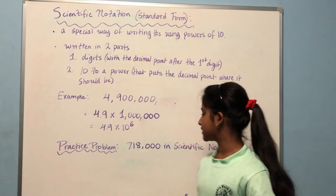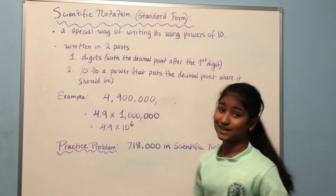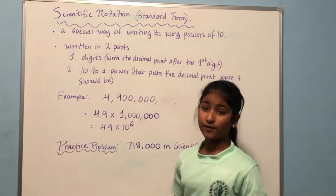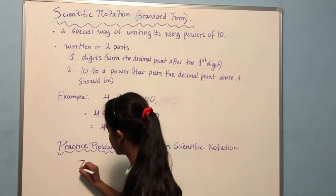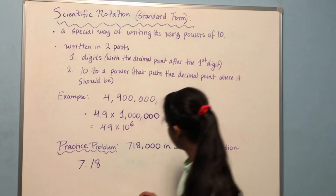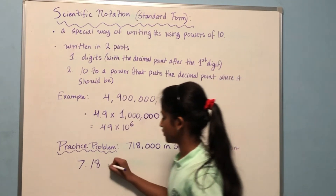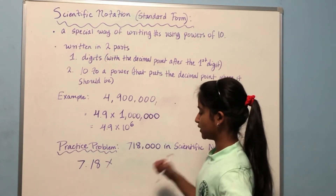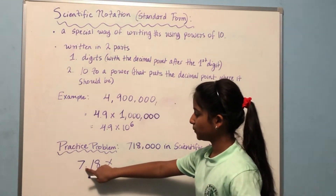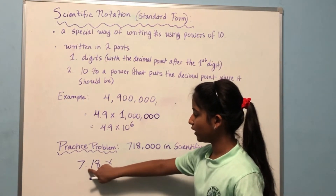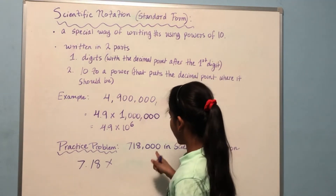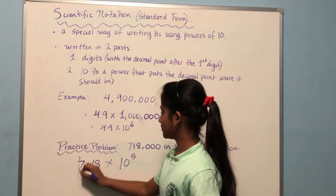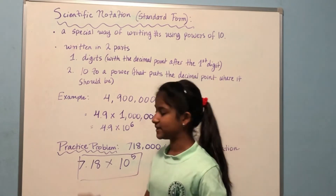Now let's do a practice problem: write 718,000 in standard form. The first digit should have a decimal point after it, so it should be 7.18. There are two digits after the decimal, and there are three zeros in 718,000, so we add two more to get ten to the power of five. The answer is 7.18 times ten to the power of five.